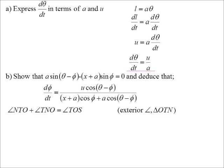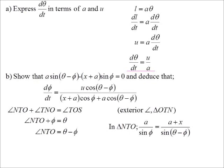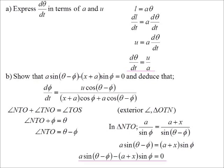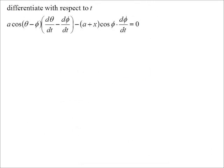The second one, a lot more interesting. We need to show that A sin(θ - φ) minus (x + a) sin φ is equal to zero, and from that to work out the rate of change of phi with respect to time. If you look at the diagram, I'm going to have to find some angles here. So I know angle NTO plus angle TNO would be TOS, exterior angle of triangle OTN. So NTO plus φ is θ, making NTO equal to θ - φ.